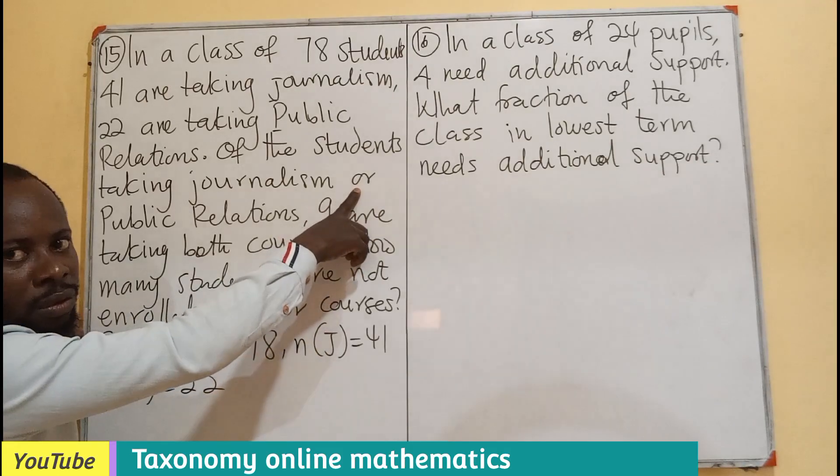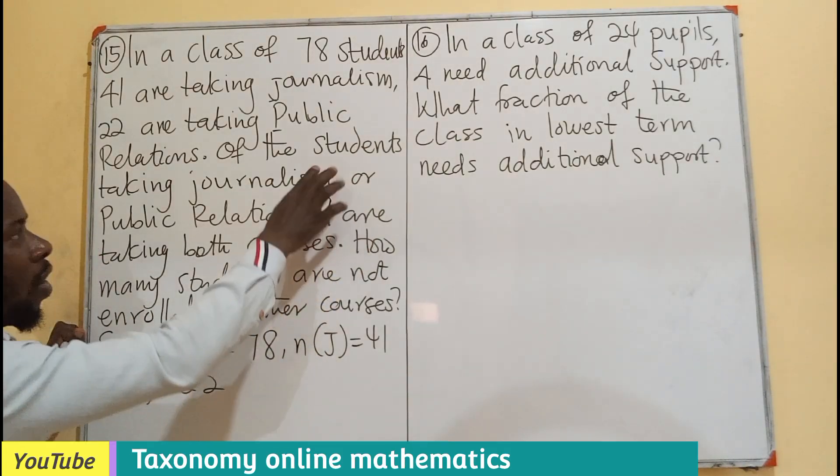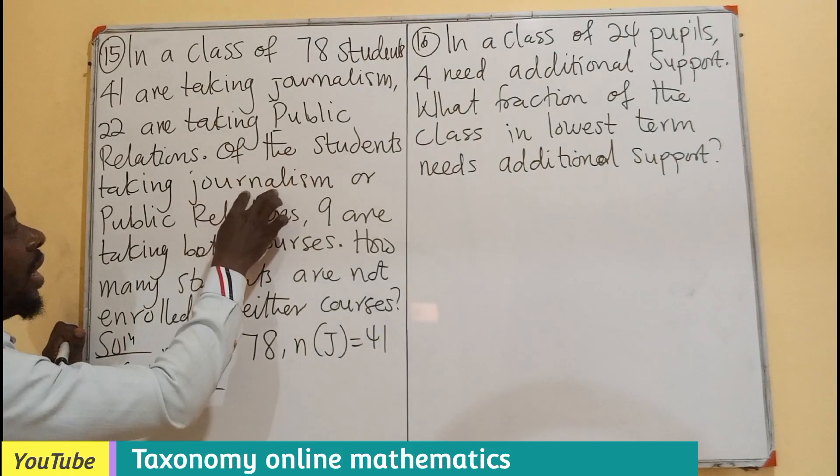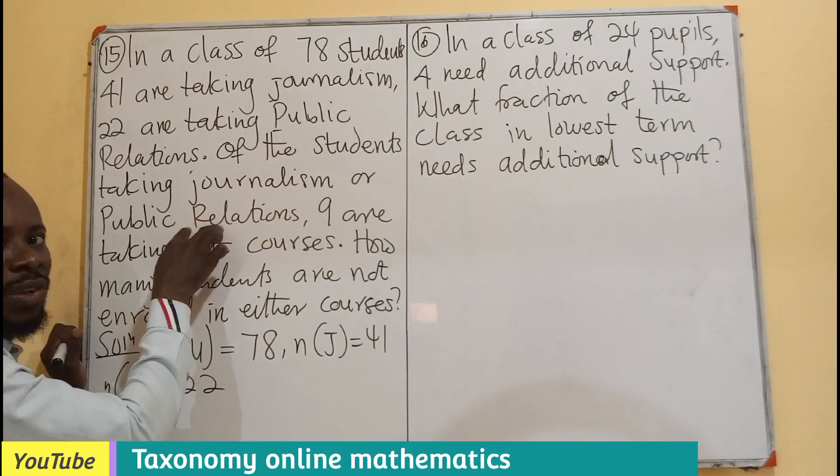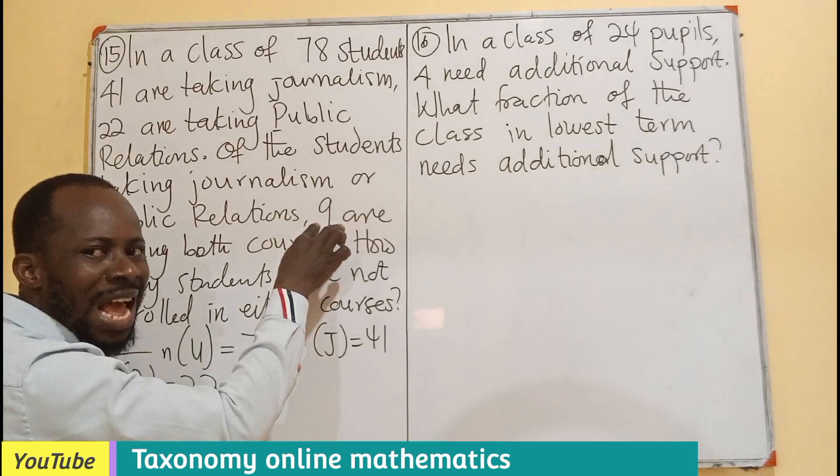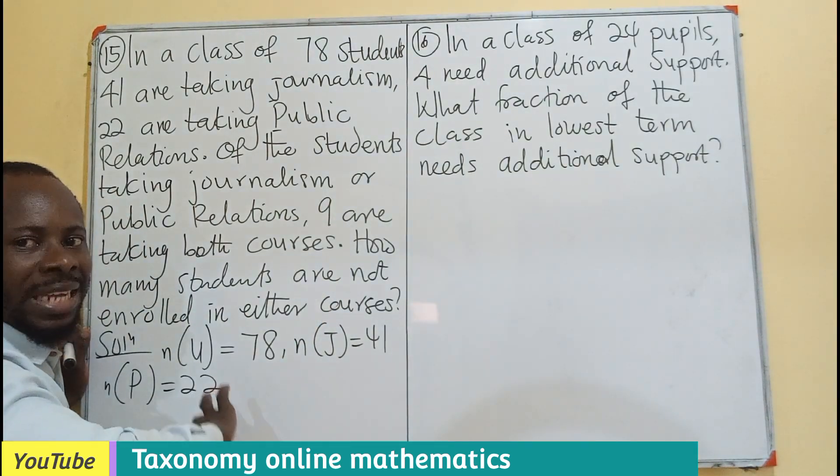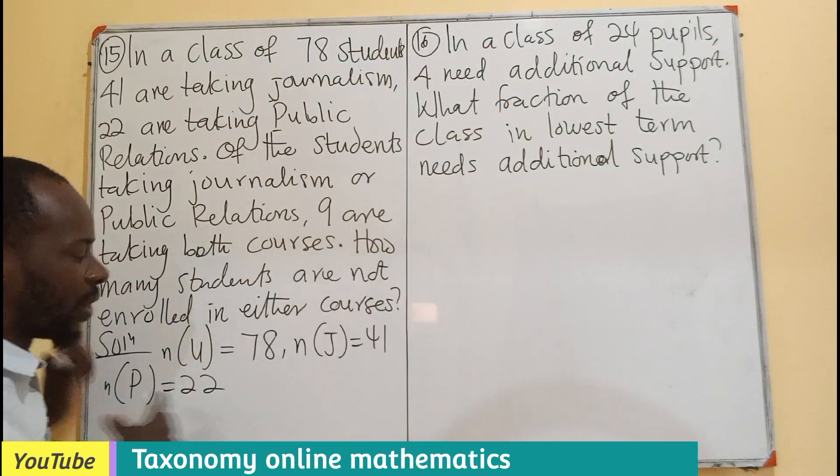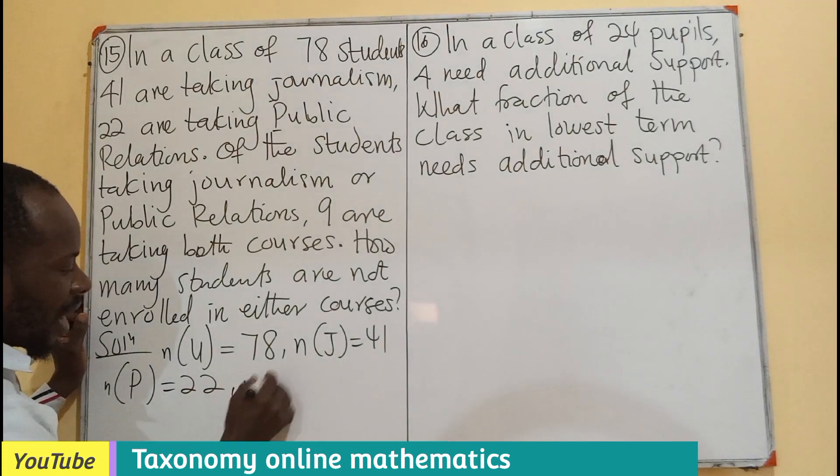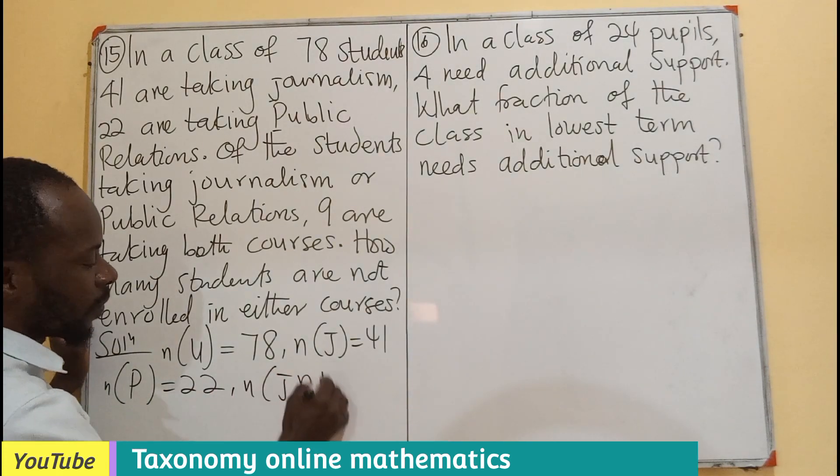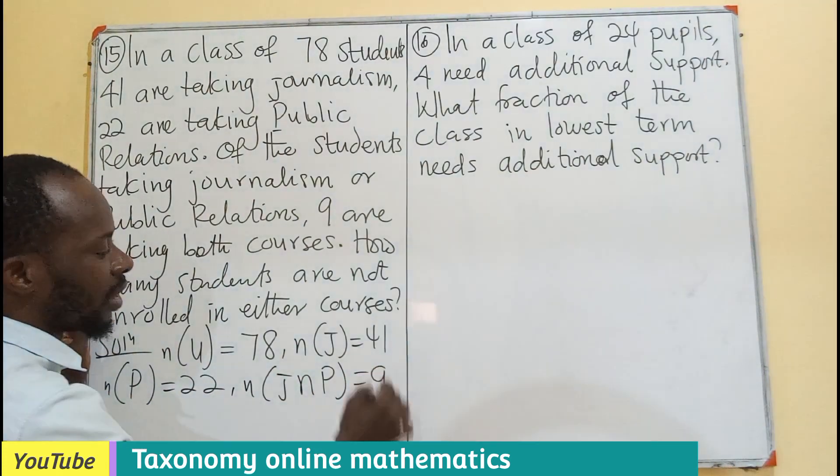Among these two, or means union. So the union of journalism and public relations, out of this union, there is nine of them doing both the journalism and public relations. In this case, our intersection is going to be 9.